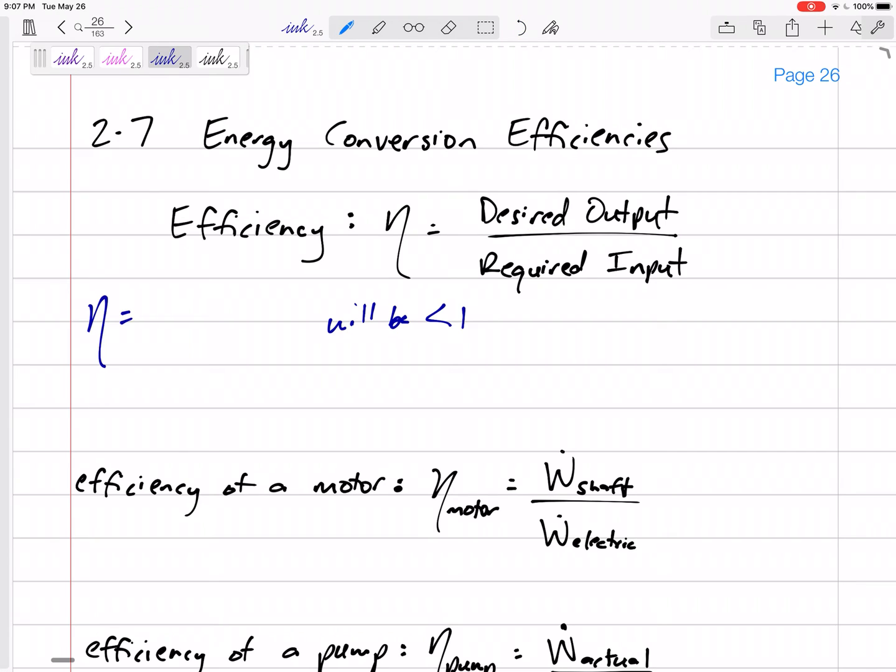So generally that's going to be the power. So W dot that we get out of it is going to be less than W dot that we put into it. So maybe we know the efficiency, 88%. Then if we know this and we know one of the other, work in or work out, then we can solve for that. We can rearrange.